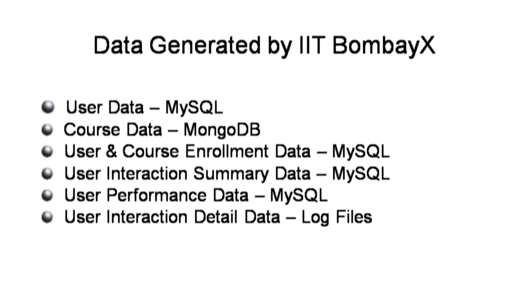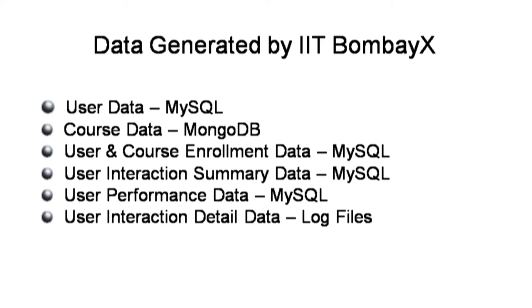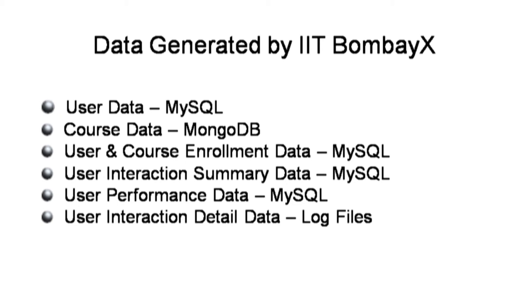User data is available in the MySQL database. Course data — the course content data — is available in MongoDB, but we won't use the course content itself; we'll use only the user interaction with the course. User and course enrollment data also comes from MySQL, showing which user has enrolled in which course. User interaction summary data is generated by Open edX as summary data of user interactions, and we'll use that sometimes.